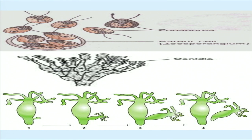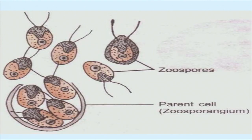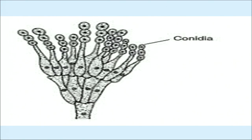In the pictures shown: the first picture shows zoospores and the parent cell called zoosporangium; the second picture shows conidia seen in Penicillium; and the third picture depicts budding in Hydra, showing a larger part and a smaller part which eventually detaches and develops into a new organism. Organisms also reproduce by special asexual reproductive structures like zoospores seen in Chlamydomonas and conidiospores seen in Penicillium. Other asexual special reproductive structures include gemmules in sponges.